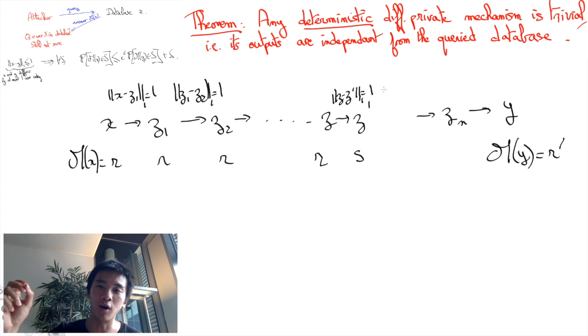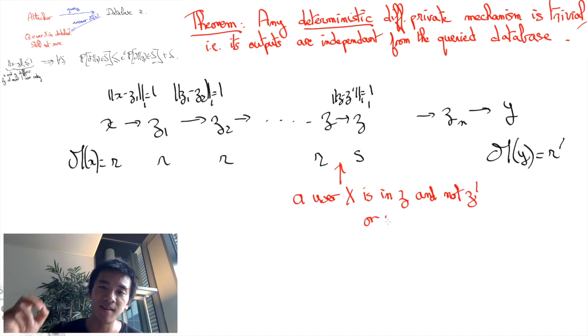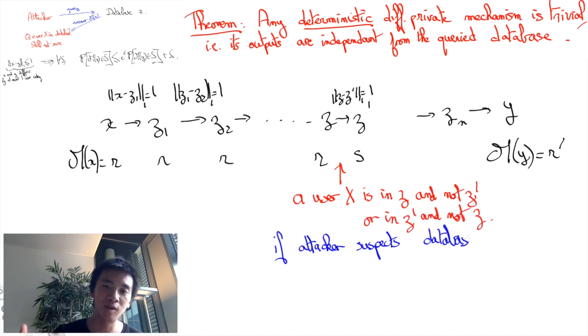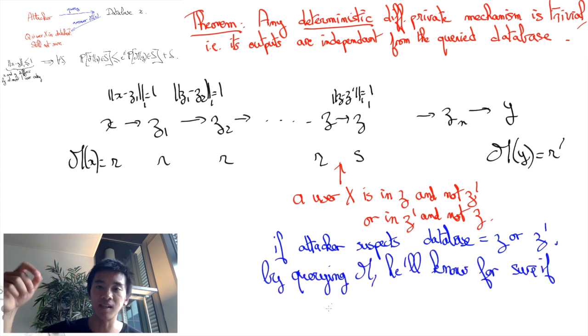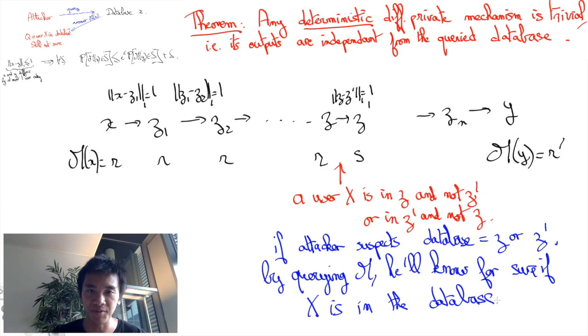and so the removal of one user or the addition of one user has completely changed the result, and this means that an attacker who knows the answer of the mechanism can fully determine whether the user that has been removed or added is in the database or not, and this breaks privacy. And this argument is the reason why differential privacy requires randomization.